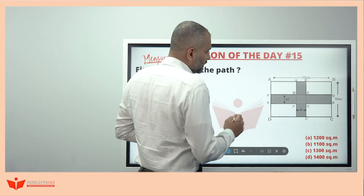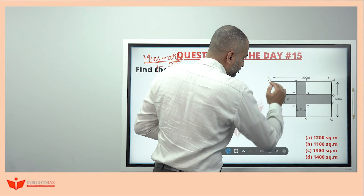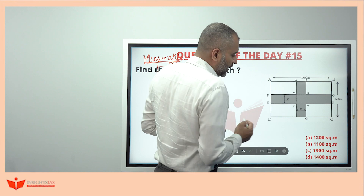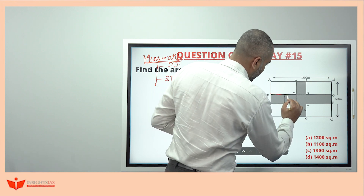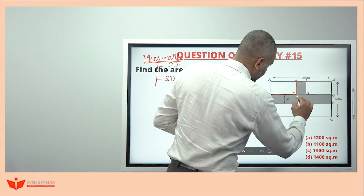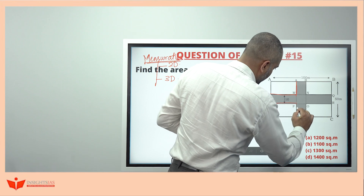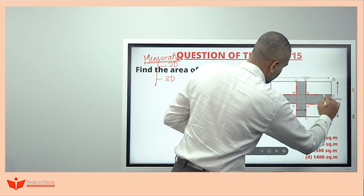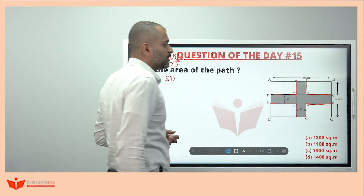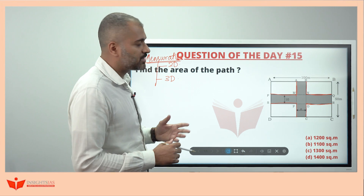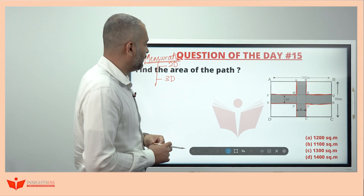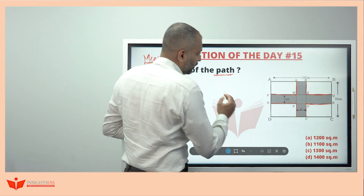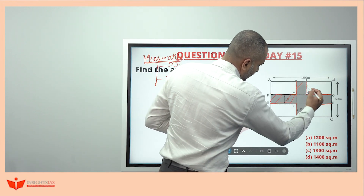In this question, a figural question has been given. This is a rectangular shape field in which there is a path running in this direction. These are called pathway questions — this is the pathway or road, like a jogging track. You have to find the area of this path.